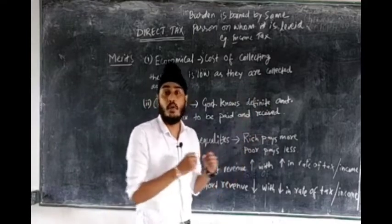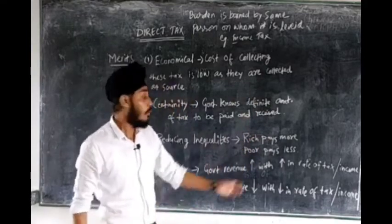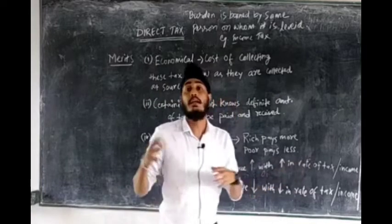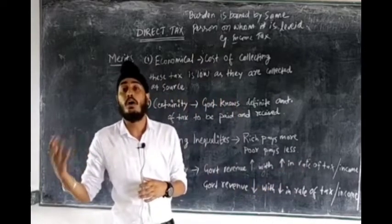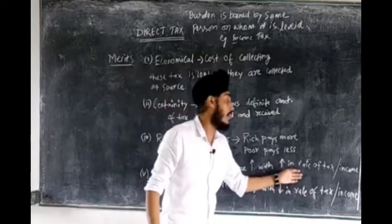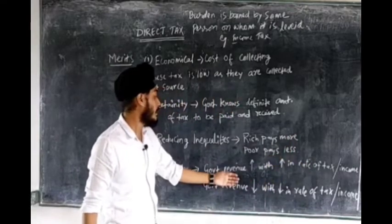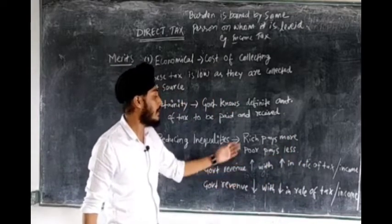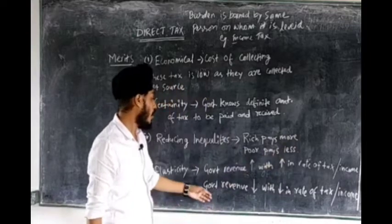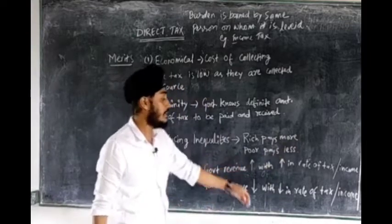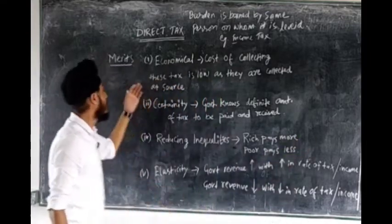Elasticity means government revenue will increase when the rate of tax increases. As the rate of taxes increases and the income of the household increases, automatically the rate of tax increases. That is the reason government revenue increases with an increasing rate of tax, and government revenue decreases when there is a decrease in the rate of tax.